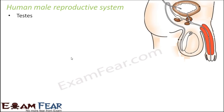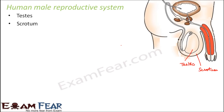Testis is one of the most important parts. This is the sideways view of the reproductive system of a human male. This structure is the testis and they exist in pairs — there are two testes on both sides. Next is the scrotum, which is this bag-like structure that contains the testis. Testis is a very important organ because inside the testis the sperms are produced, and sperms are the male gametes. Next is the epididymis, which is the tube that carries the sperms from the testis to the outside.